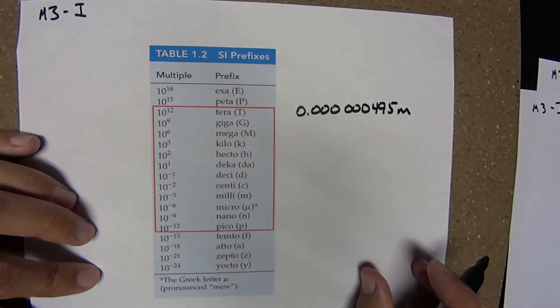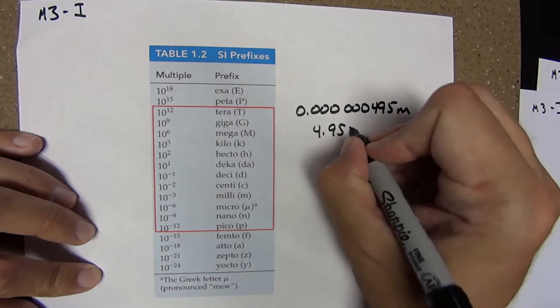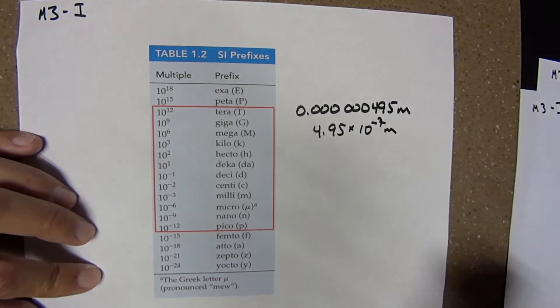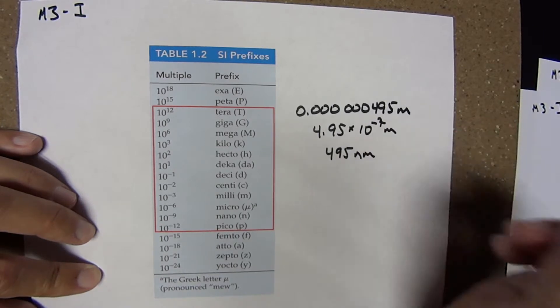In normalized scientific notation, that value would be 4.95 × 10^-7 meters. Or using SI prefixes, that wavelength can be expressed simply as 495 nanometers.